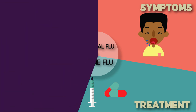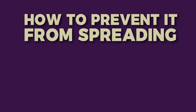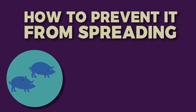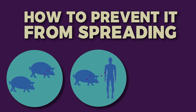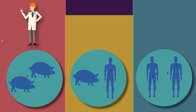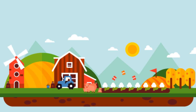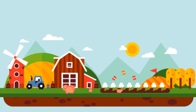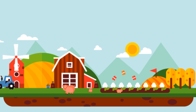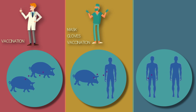How can we prevent swine flu from spreading? There are three steps. First, prevent it in pigs by giving vaccinations to pigs. Second, prevent transmission from pigs to humans — this can only happen at swine farms or veterinary facilities, so people who work in such areas should wear masks and gloves and protect themselves through vaccination.